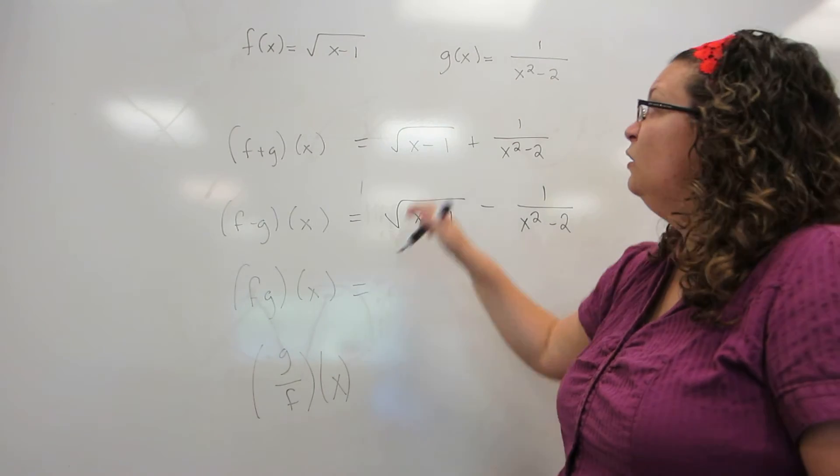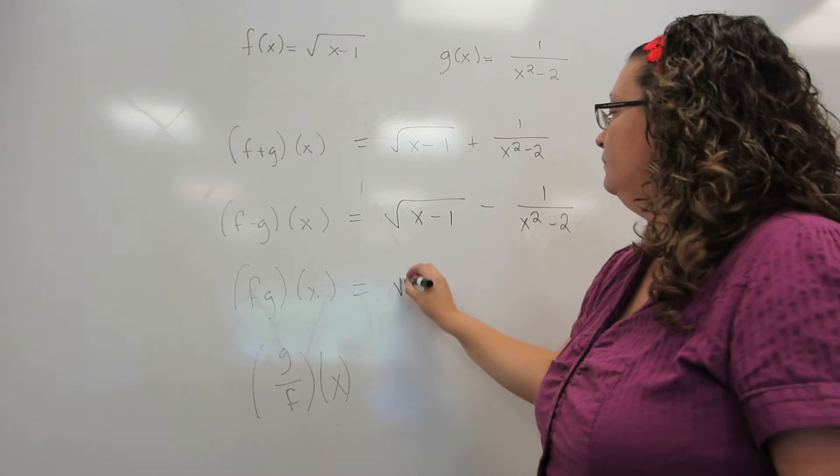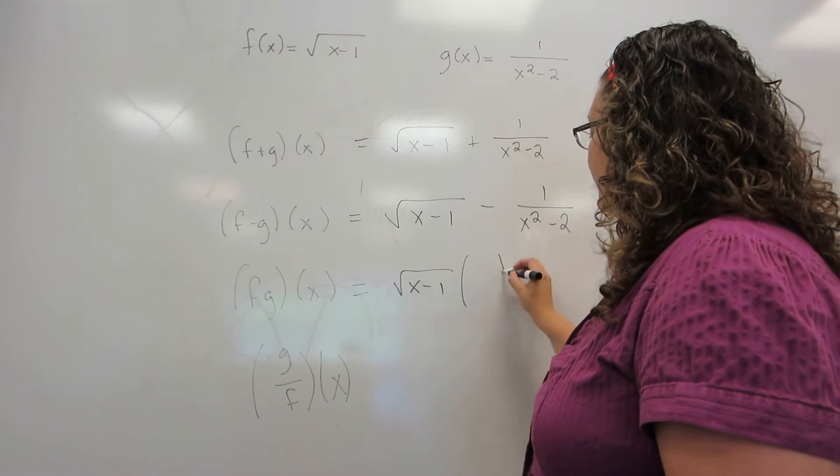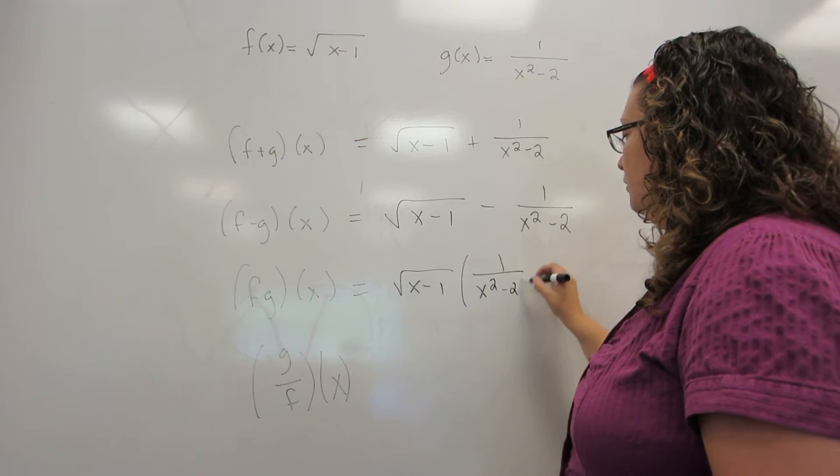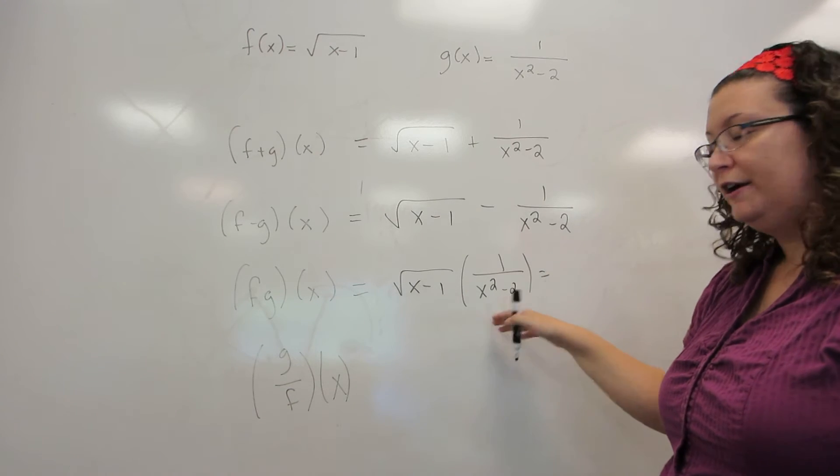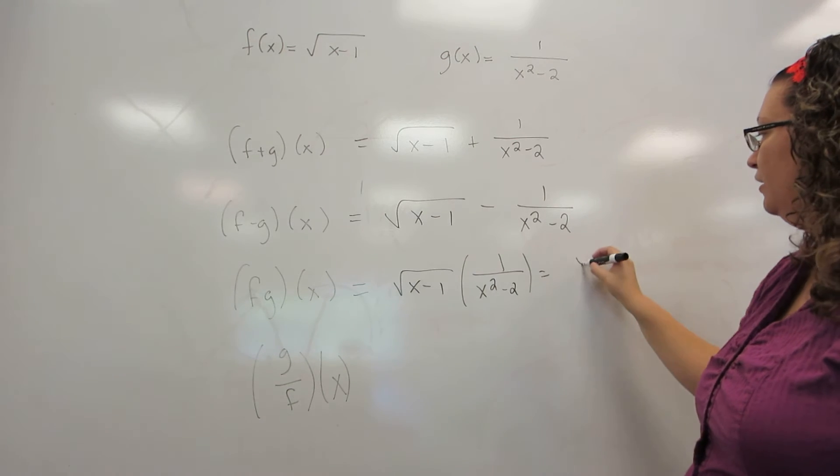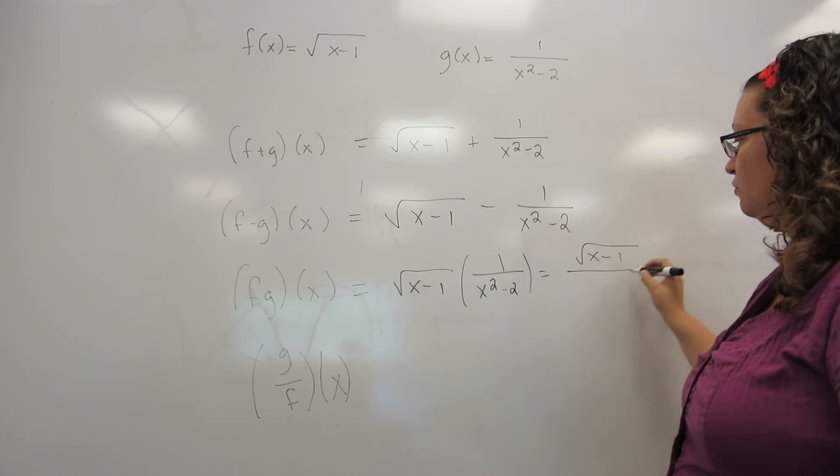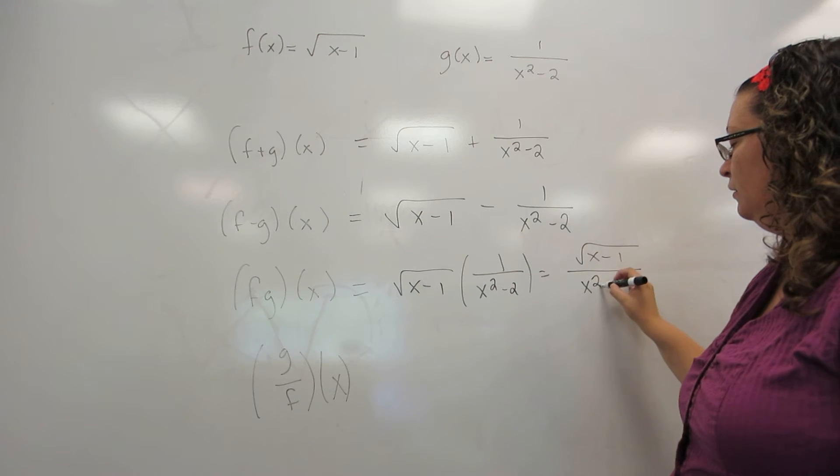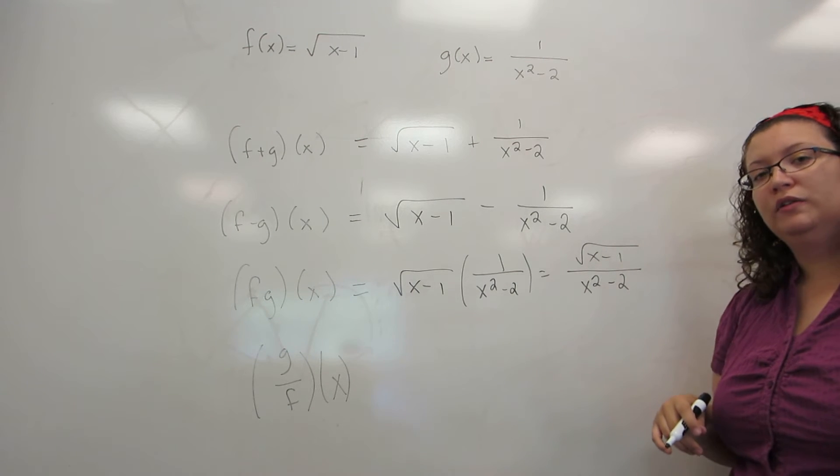Multiplication, when I multiply these, there actually is a way to write it at least a little bit cleaner. A number times a fraction puts this in the numerator, so I'm going to end up with the square root of x minus 1 over x squared minus 2.